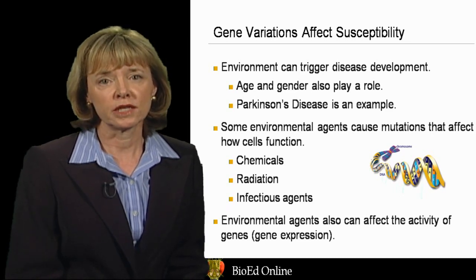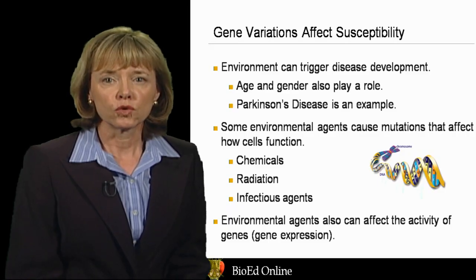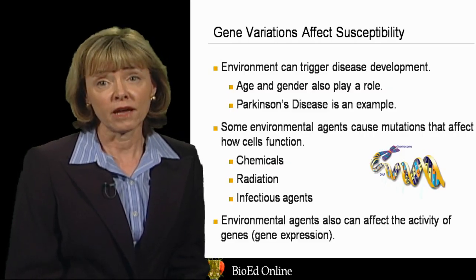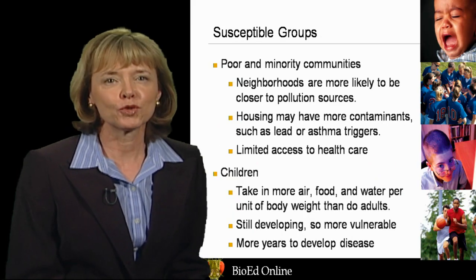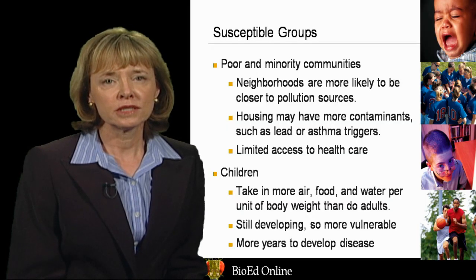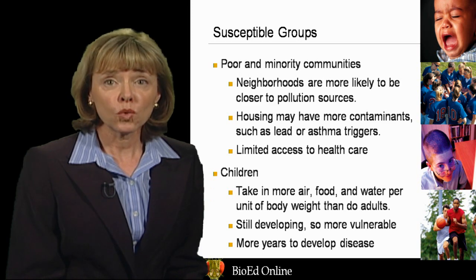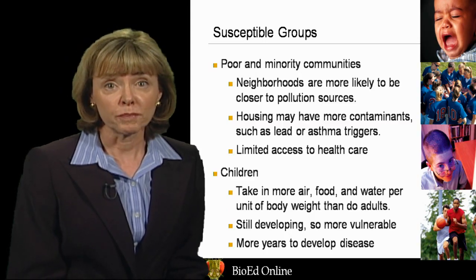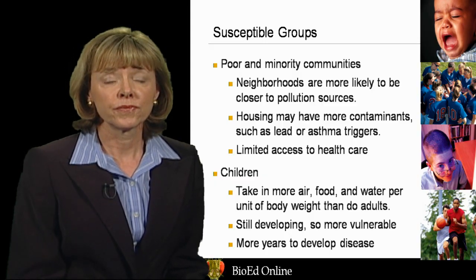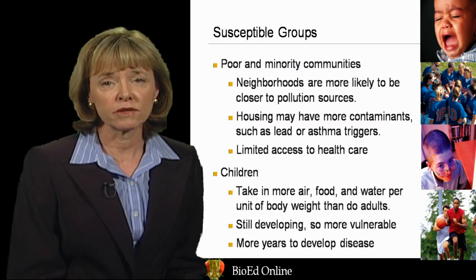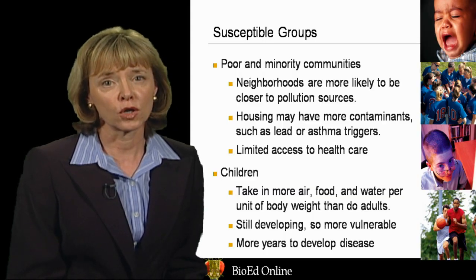There are also important studies underway in many places around the world to identify the groups of genes that confer greater risk of certain diseases such as Parkinson's disease, Alzheimer's, and cancer that are believed to have environmental connections. Some groups are more susceptible to harm from the environment than others. For example, poor communities and those consisting of minority citizens are more likely to be located closer to sources of pollution. In addition, their housing may have more contaminants, such as lead from paints or asthma triggers from insects that are present. People who have low socioeconomic status also frequently have less access to preventive health care and health care in general, which then contributes to their burden of disease.